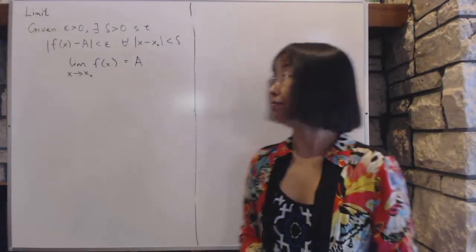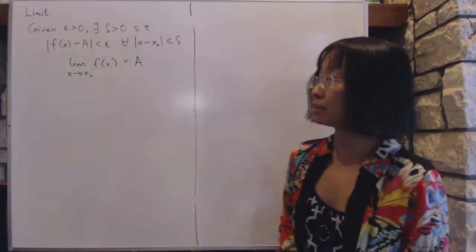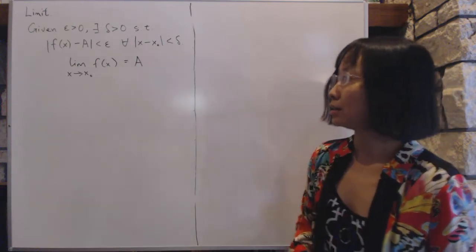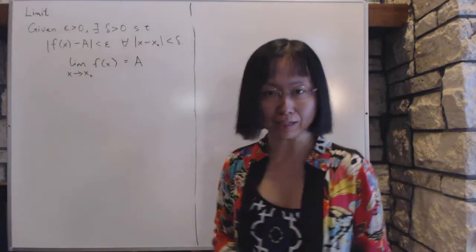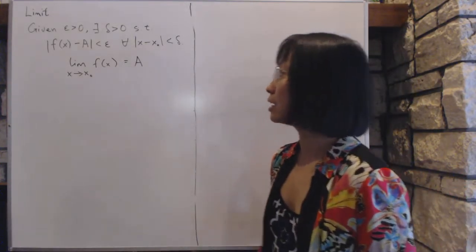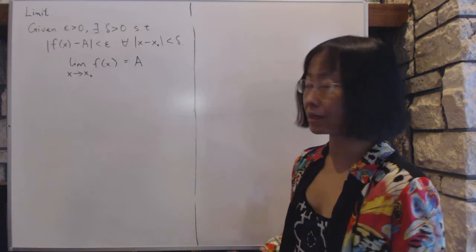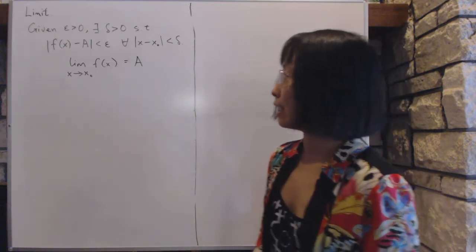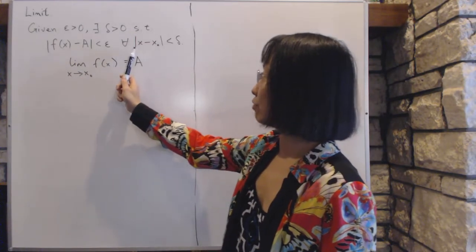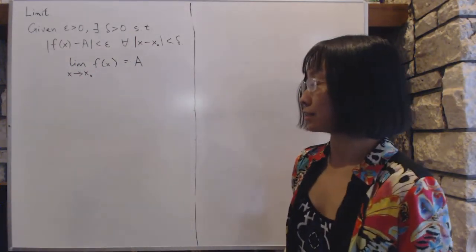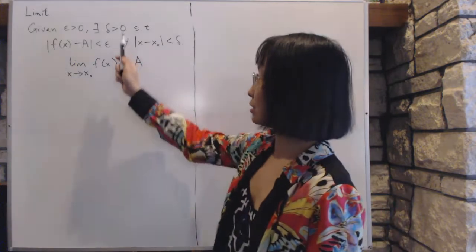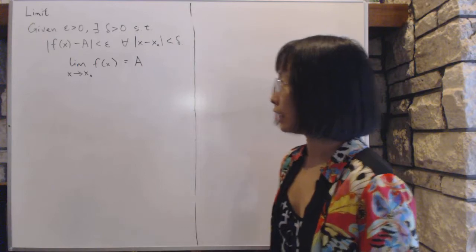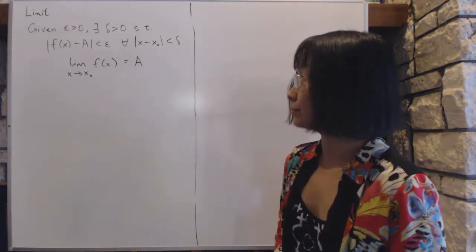Section 1.1: Functions and Limits. The limit is a fundamental concept in advanced mathematics. The definition of limit from elementary calculus states: given epsilon greater than zero, there exists a number delta greater than zero such that |f(x) - a| is less than epsilon for all x with |x - x₀| less than delta. When that situation is satisfied, we call it the limit of f as x approaches x₀ equals a.